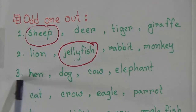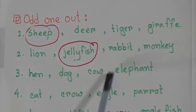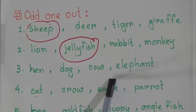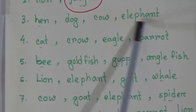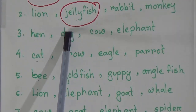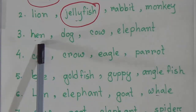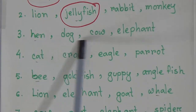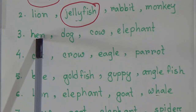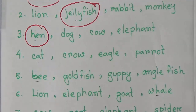Our third odd one out is: hen, dog, cow, elephant. Elephant is a land animal, cow is a farm animal, dog is a pet animal, and hen is also a farm animal. But hen is a bird — all of the others are animals, but only hen is a bird. So hen is the odd one out.